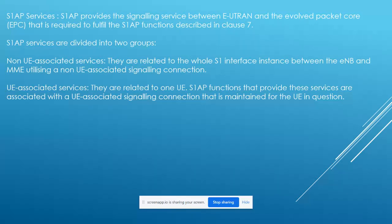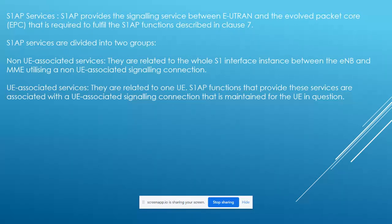UE-associated services are related to one specific UE. They are associated with the signaling connection that is maintained for that UE. Keep in mind there are two services for S1AP: non-UE-associated services and UE-associated services.